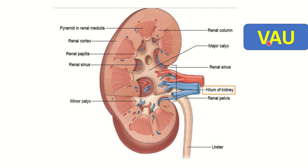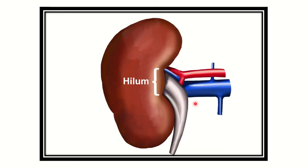There is a mnemonic — VAU — to remember the structures located at the hilum of the kidney from anterior to posterior. V stands for vein, meaning the renal vein is most anterior. A stands for artery, the renal artery. U stands for ureter, which is the most posterior structure.